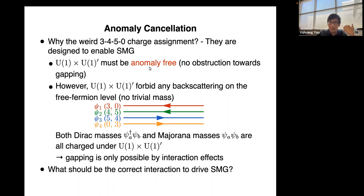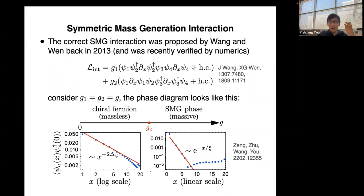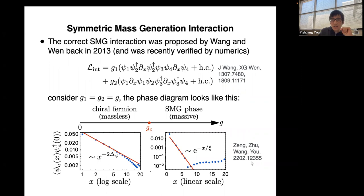We have argued that the system is anomaly-free, meaning there is in principle no obstruction towards gapping. We should be able to gap all left- and right-moving fermions simultaneously — the system is also free from gravitational anomaly. So there's no obstruction to gapping, but no way to do that on the free fermion level. There must be an interaction-driven gap. The correct SMG interaction was proposed by Fidkowski and Kitaev back in 2013.